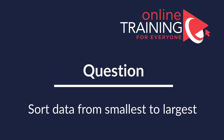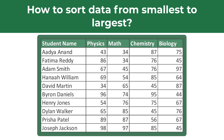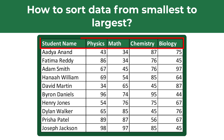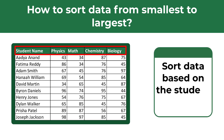A lot of times you might get a question on how to sort data in Excel from smallest to largest. For example, you might be presented with a dataset which shows student names and their grades on different subjects. Here on the screen we see the grades in physics, math, chemistry, and biology, and we need to sort this dataset based on the student names.